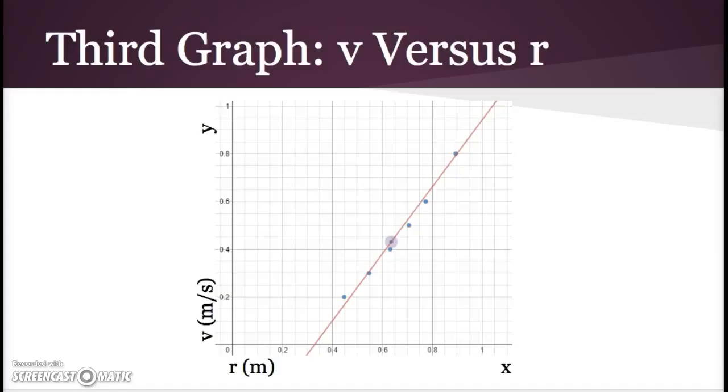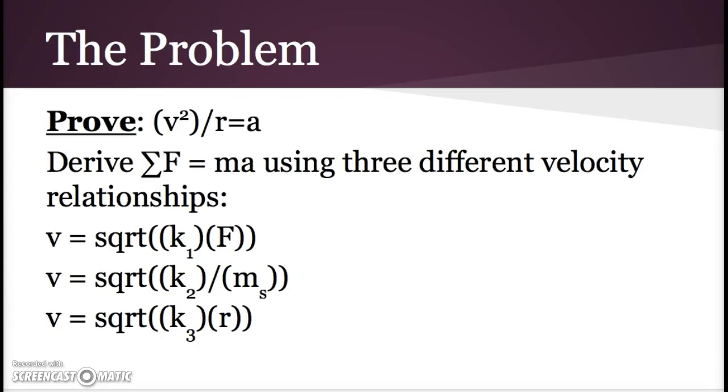We graphed it with velocity on the y-axis and r on the x-axis. From this graph, we got v equals square root of k₃ times r.